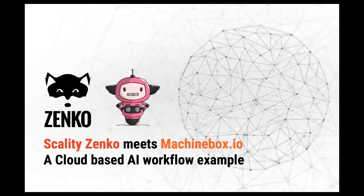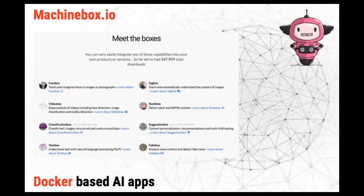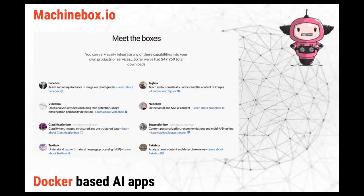In order to do that, Zenko met a company called Machine Box a few weeks ago, which has very cool AI applications that run in a Docker container. It's very easy to launch in a terminal with a single command. They have applications for face recognition, classification of images, indexing video content, image tagging, and recognizing nudity in videos. Plenty of very cool stuff.